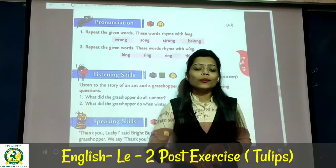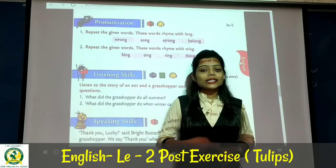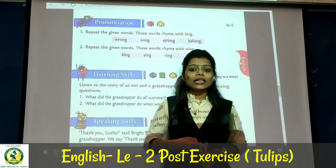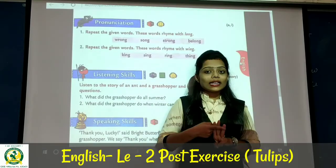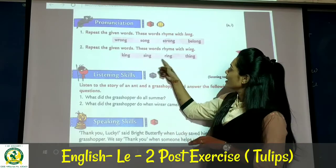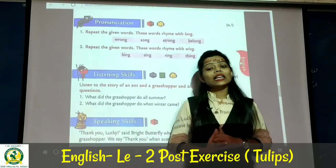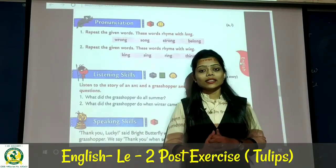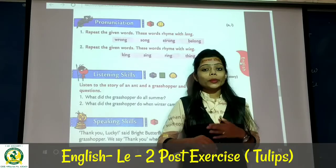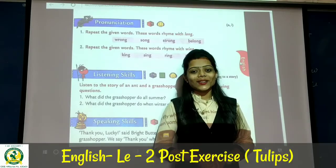Next word is wing — W-I-N-G. Rhyming words: S-I-N-G sing, K-I-N-G king, R-I-N-G ring, T-H-I-N-G thing, Z-I-N-G zing — and many more are possible.